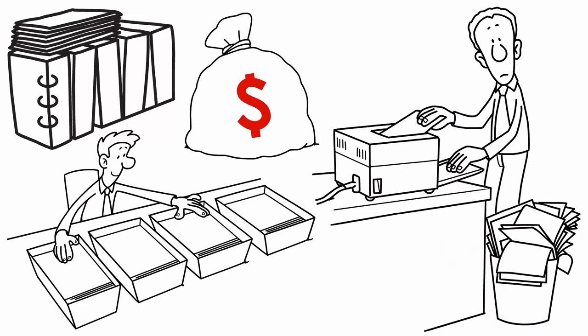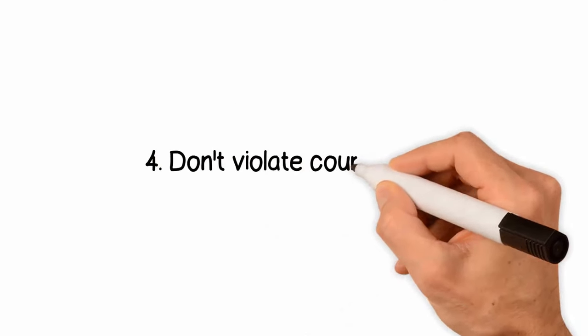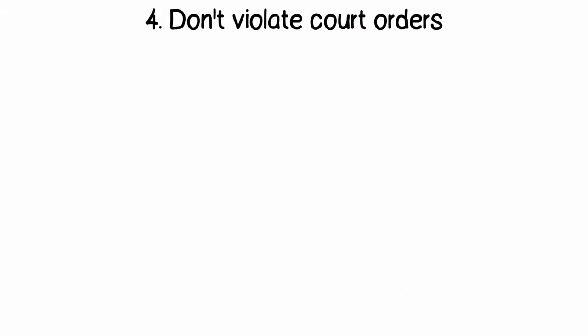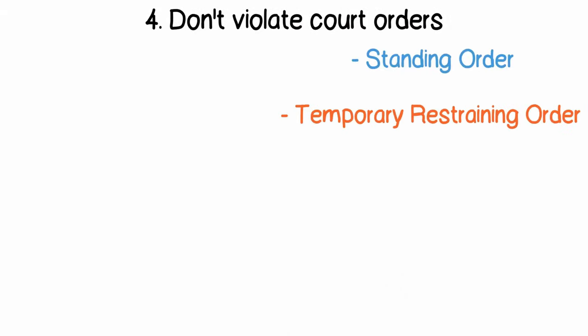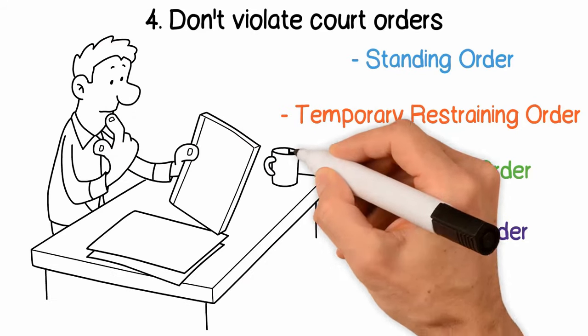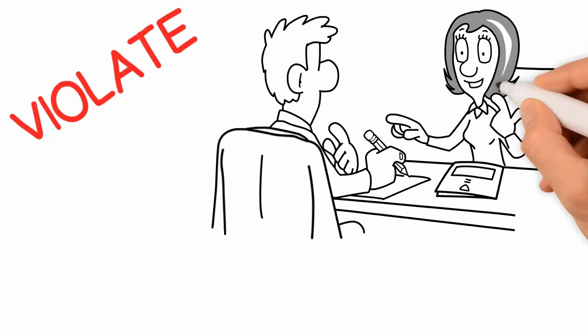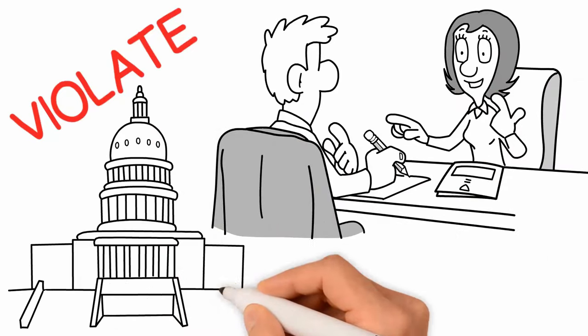Number four: don't violate court orders. If you're under a standing order, a temporary restraining order, temporary order, or a protective order, read the document or documents carefully. Know what you can do and what you can't. If you violate the orders, you can cause your attorney to have multiple conversations with opposing counsel and the court.